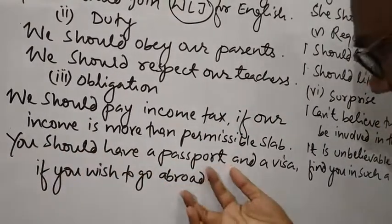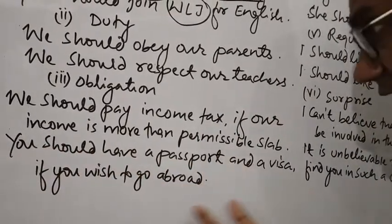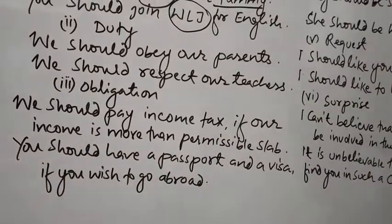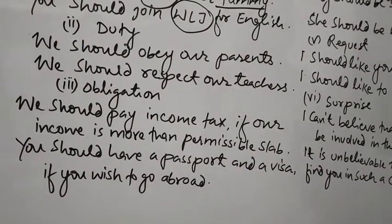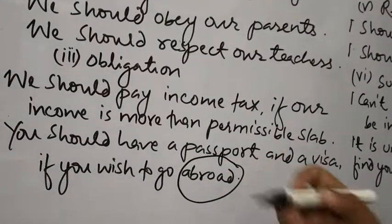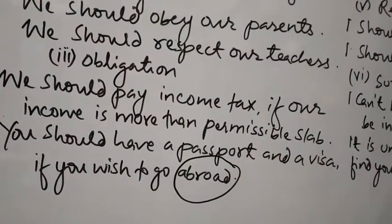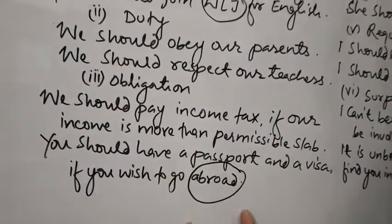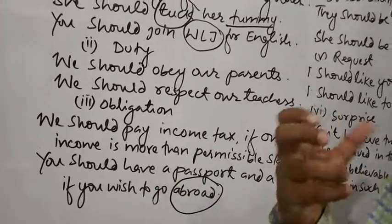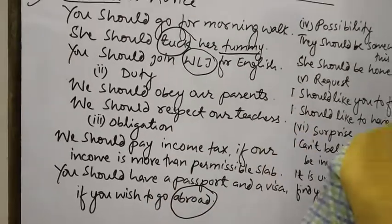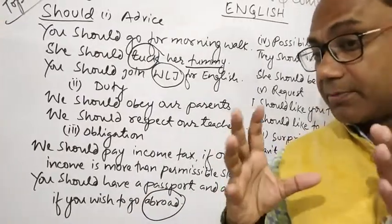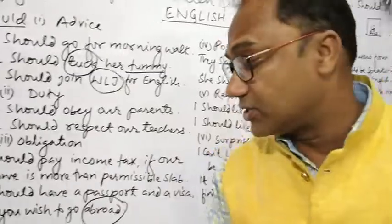Another obligation example: 'You should have a passport and a visa if you wish to go abroad.' Agar aap videsh jana chahte hain, to aap ke paas passport aur visa hona chahiye. Also: 'We should not vandalize government property.' Hame sarkari sampatti nasht nahi karni chahiye.